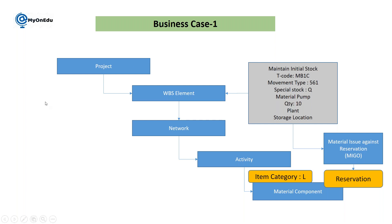In business case one, I'm focusing on maintaining the initial stock and then issuing material with reference to the project and the reservation. In SAP, you have a project with a WBS element and you can maintain stock at WBS level. The stock has a location — it will be available in a plant — with a material number and an initial quantity. The movement type is 561 and the special stock indicator is Q. The transaction code to maintain initial stock is MB1C.